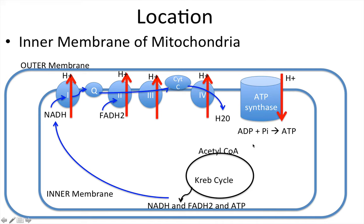Now let's look at how the Krebs cycle and the electron transport chain fit together. We've got the Krebs cycle happening in the mitochondrial matrix, with acetyl-CoA joining oxaloacetate. The end goal of the Krebs cycle is to create these high-energy intermediates: NADH and FADH2.